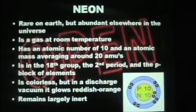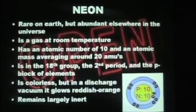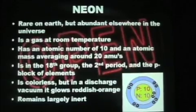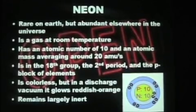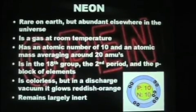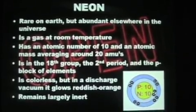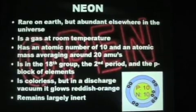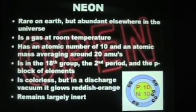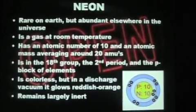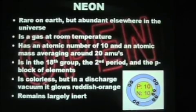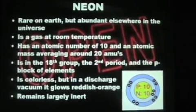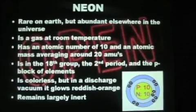Neon is rare on Earth but abundant elsewhere in the universe. It's a gas at room temperature and has an atomic number of 10 and an atomic mass averaging around 20 AMUs. It's in the 18th group, the second period, and the P block of elements. It's colorless but in a discharge vacuum it glows reddish orange. It remains largely inert because it has eight valence electrons and it's a noble gas.